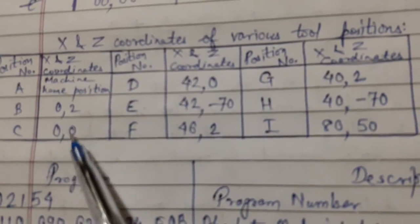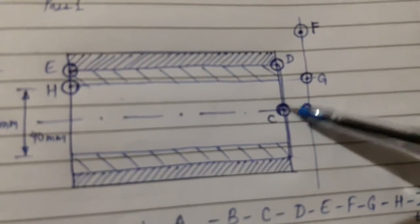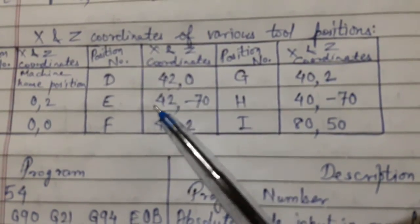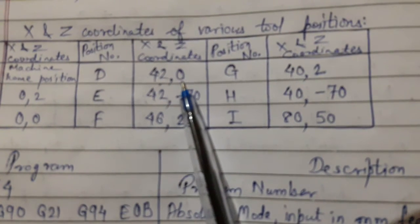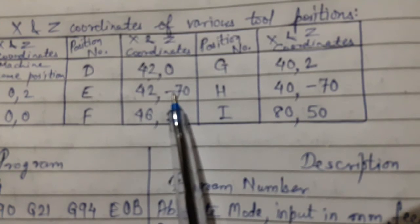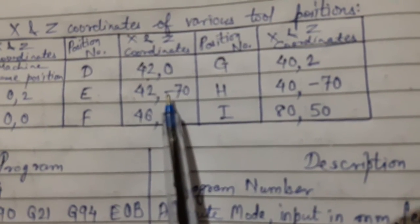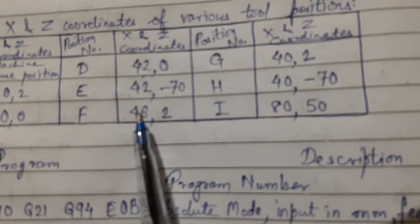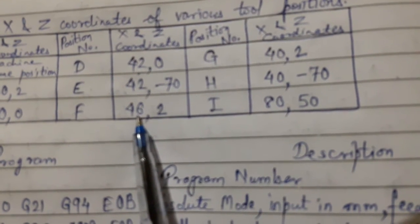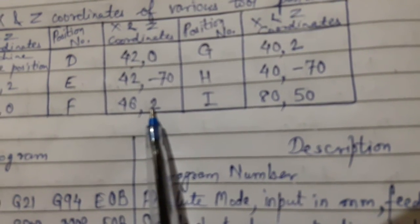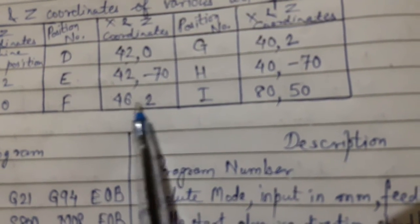Position C has X equal to 0 and Z equal to 0. Position D has X equal to 42 and Z equal to 0. The tool then moves left to remove material, reducing the diameter from 44 to 42 mm. After the first pass, the tool is taken to position F, which is away from the job — X is 46 and Z is 2 mm, since the original diameter was 44 and we add 2 mm clearance.